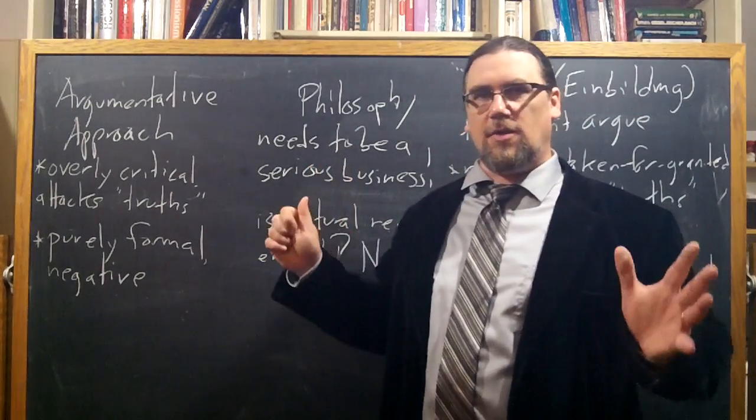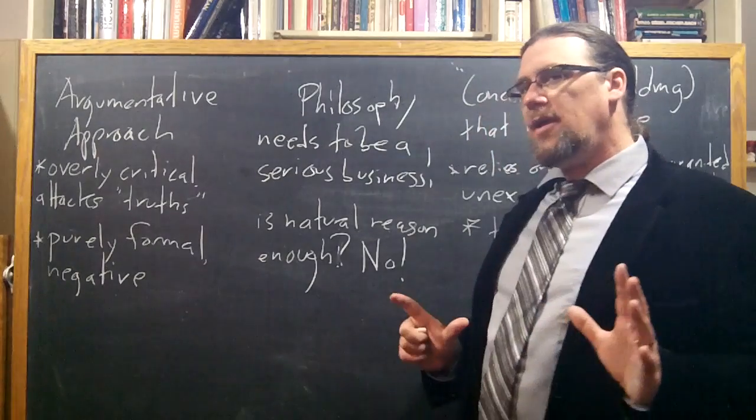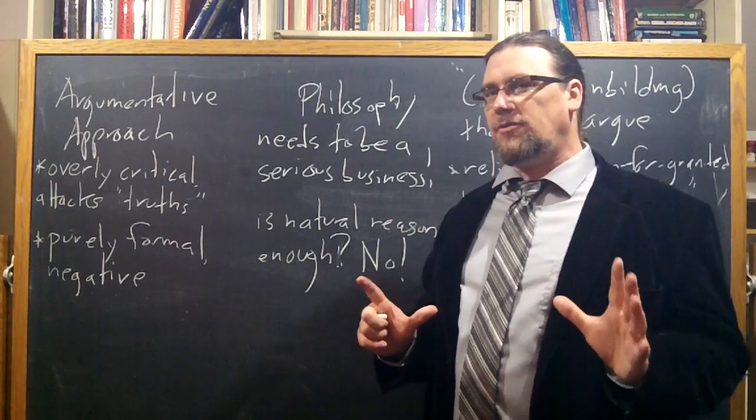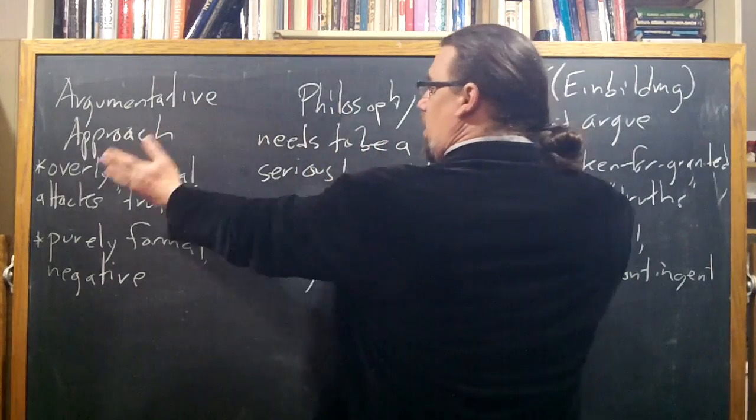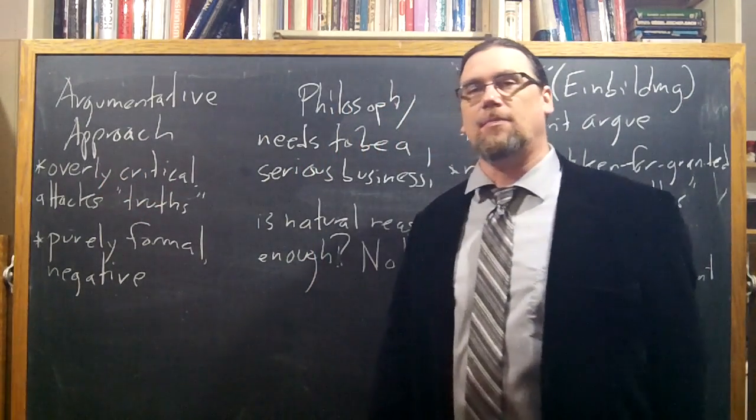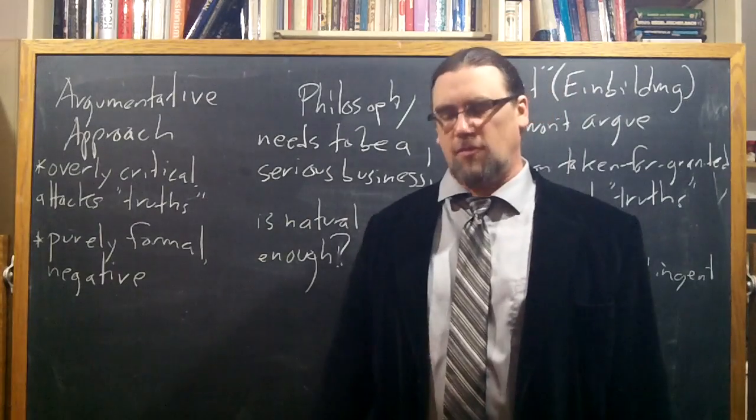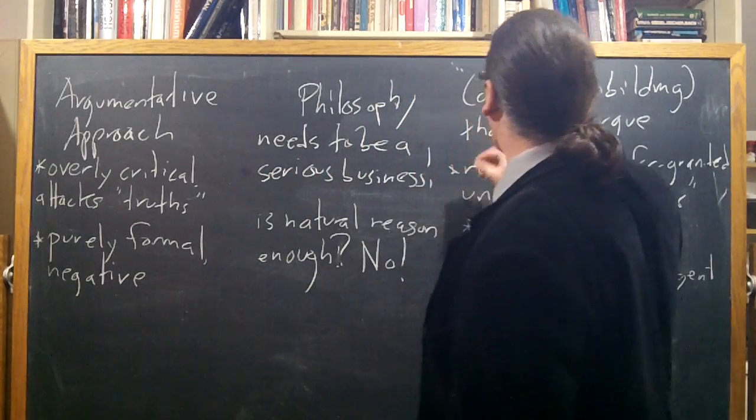So it's not like we have four terms here - the argumentative approach, the commonsensical don't bother me with your reasoning approach, philosophical science, and then other sciences. What he's saying is if other sciences are not adequately philosophical, they don't stay here, they wind up on this side, and they wind up on this side. Probably a weird hybrid mixture of both.